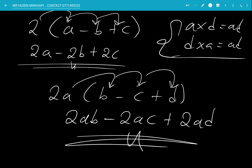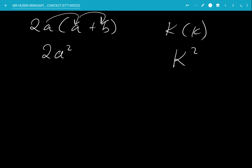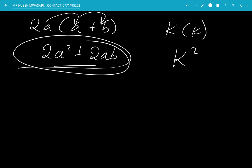When multiplying 2a times open bracket A plus B, the 2a multiplies A first. Since it's like having A times A, this gives you A squared. So 2a times A gives you 2a squared, and 2a times B gives you positive 2ab. This is a very important point to remember.